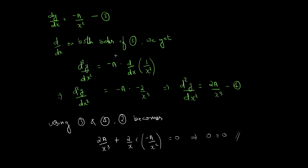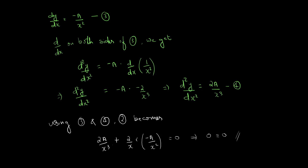Hence, the relationship y = a/x + b is indeed a solution of the differential equation d²y/dx² + (2/x)(dy/dx) = 0. That is the solution of question 1.